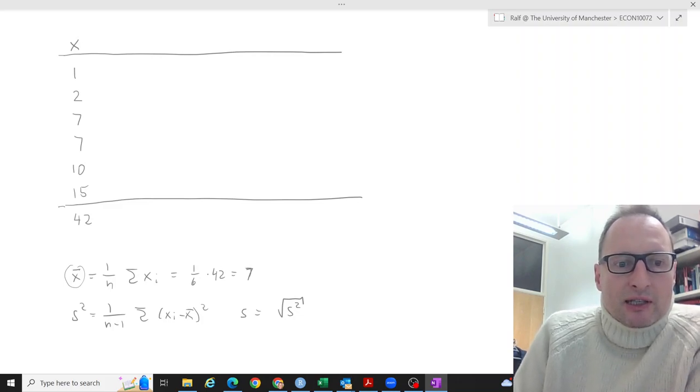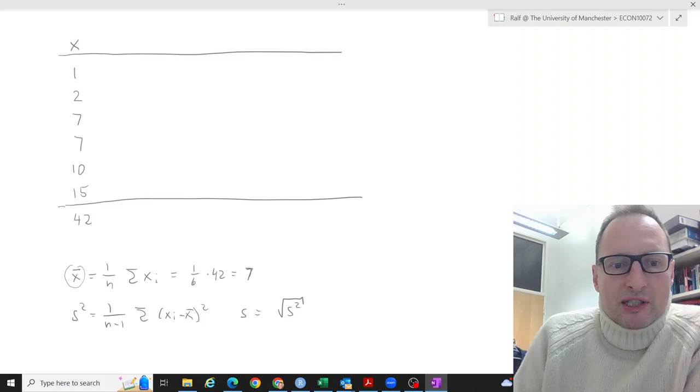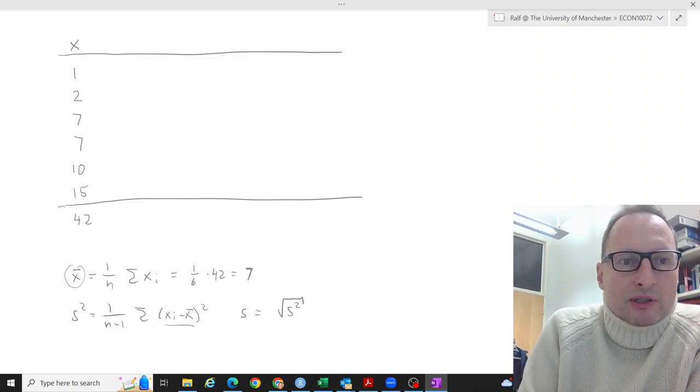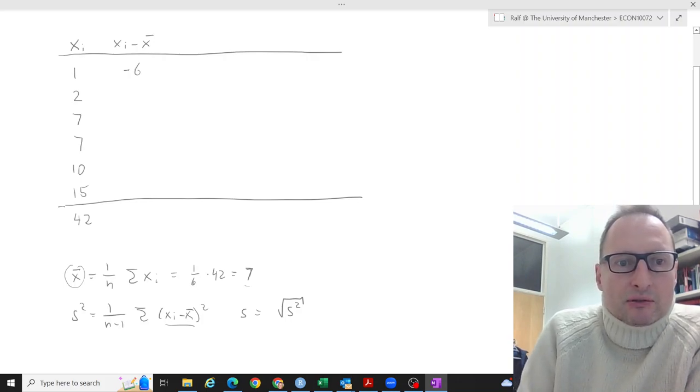Then to calculate the sample variance, what we first need is these terms here: xi minus x-bar. So here are the xi's. So we need xi minus x-bar. That is 1 minus 7 which is minus 6. Then 2 minus 7 which is minus 5. 7 minus 7 is 0. 7 minus 7 is 0.